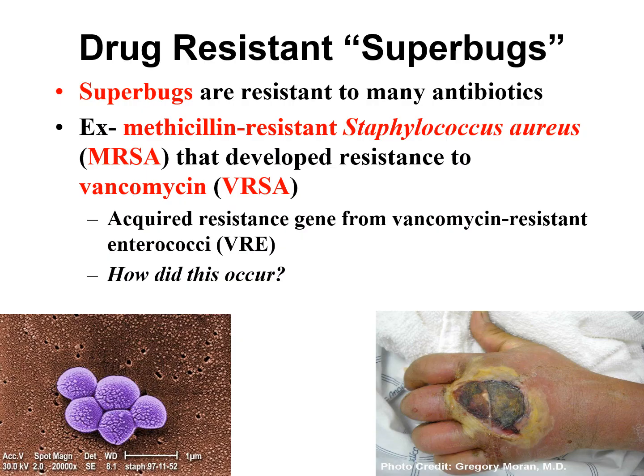Superbugs are bacteria that are resistant to many antibiotics, and that's what happened to MRSA. MRSA has now developed resistance to vancomycin, giving us VRSA. We've actually traced this back to a patient in Michigan in 2002 — a diabetic with kidney failure undergoing dialysis who had both MRSA and vancomycin-resistant Enterococcus (VRE). The MRSA and VRE bacteria got together and performed horizontal gene transfer.